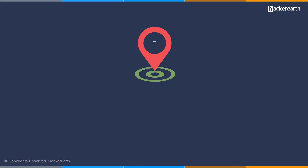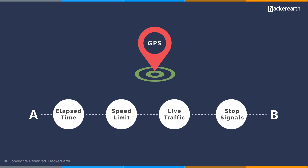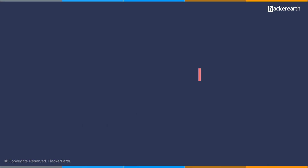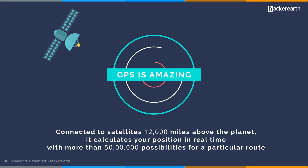Once you've understood the way GPS navigation works, you'd wish the world could be a simple grid — but to a programmer's disappointment, it isn't. For a GPS, distance is not the only factor in choosing a route; elapsed time, speed limits, live traffic updates, and the number of stop signals all have to be taken into consideration. That's why GPS occasionally suggests winding state highways instead of usual national highways. Most GPS systems and digital maps have evolved from breadth first search to the A* algorithm, which offers better complexity. Yet GPS remains one of the most amazing devices — connected to satellites twelve thousand miles above the planet, calculating your position in real time with more than five million possibilities for a particular route.